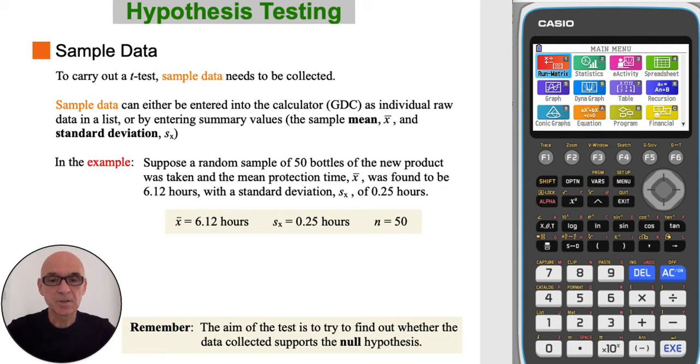Sample data needs to be collected to test the hypothesis. The sample data can either be entered into the calculator as a list, or entered using summary values (the sample mean and standard deviation). In the example, a random sample of 50 bottles of the new product was taken, and the sample mean was found to be 6.12 hours, with a standard deviation of 0.25 hours.